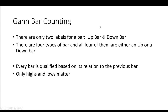With GAN bar counting, there are only two particular labels for a bar — it's either an up bar or a down bar. There are four types of bars, and all four of them can be classified as either an up bar or a down bar. Each bar is qualified based on its relation to the previous bar.